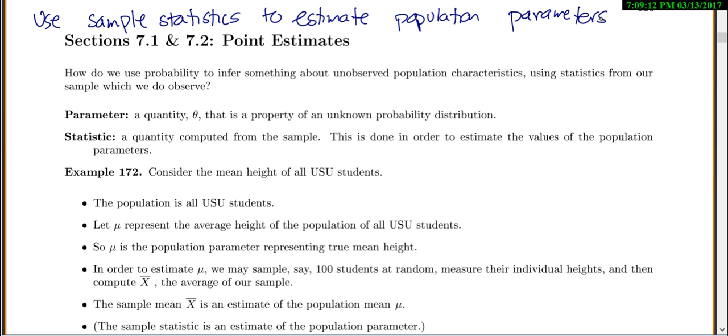These two sections are just very theoretical. First, your parameter, that's some property of your underlying population that you don't know, and we're going to call it theta. Now your statistic is some value that you compute from your sample, and we do this because we want to use that to estimate our population parameter.